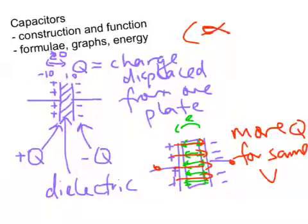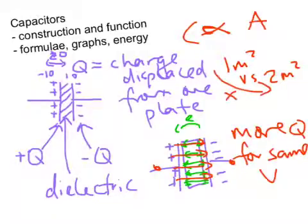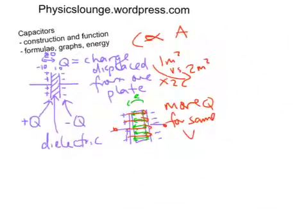There's a formula for capacitance, and maybe we won't start with the formula. Let's start with what affects it. The area of the plates overlapping, so if you had one square meter of overlap versus two square meters of overlap, that will lead to twice the capacitance.